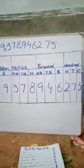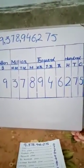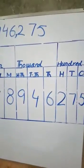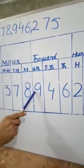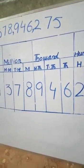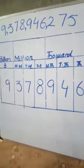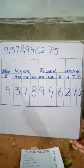Now dear students, we will put this number according to the place value. 5 in 1's, 7 in 10's, 2 in 100's, 6 in 1,000's, 4 in 10,000's, 9 in 100,000's, 8 in million, 7 in 10 million, 3 in 100 million, and 9 in billion.